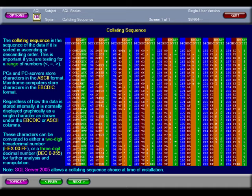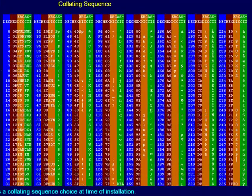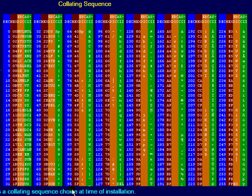Collating sequence is important. Collating sequence is the sequence of the data when it is sorted in ascending or descending order. This is particularly important when you are comparing values using the less than or greater than. Personal computers store data using ASCII characters and collating sequence. Mainframe computers use EBCDIC characters and collating sequence. With ASCII in ascending order, it's numbers, capital letters, and then small letters. With EBCDIC in ascending order, it's small letters, capital letters, and then numbers. Each has special characters scattered in different places. A few vendors allow you to choose your collating sequence.